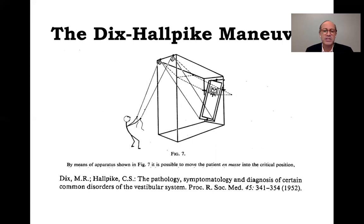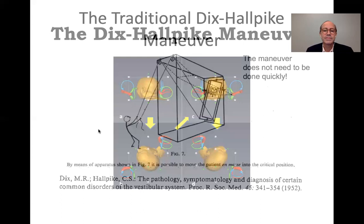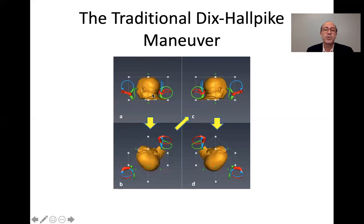Dix and Hallpike constructed a simple mechanism in which they could maintain head-on-body position but raise the feet and still elicit the associated eye movements, proving there was no vertebrobasilar problem associated in BPPV. They initially published that this Dix-Hallpike maneuver needs to be done quickly, but it seems that is actually not the case.